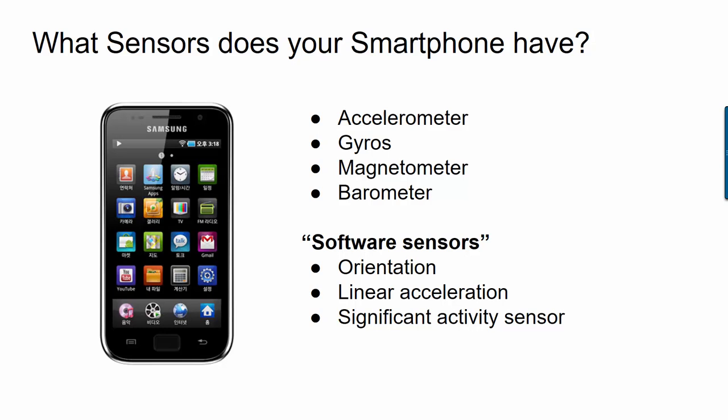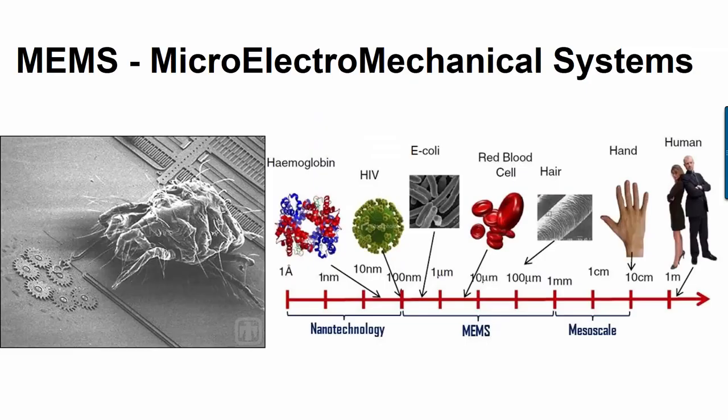You can think of a software sensor as being a little program that will integrate the existing sensor values and then output another value that we might care about, which is more complex than a physical sensor would be able to measure.